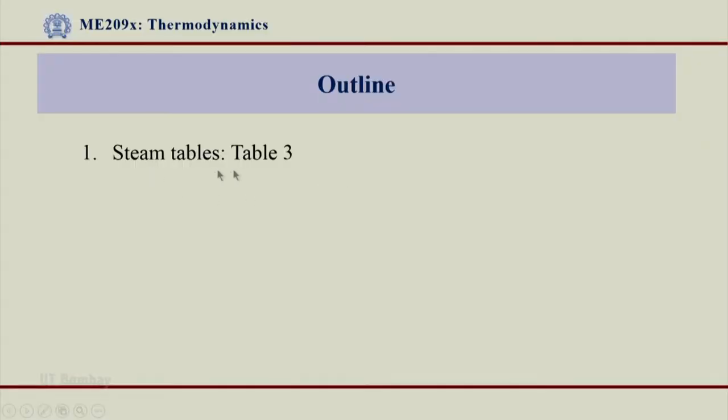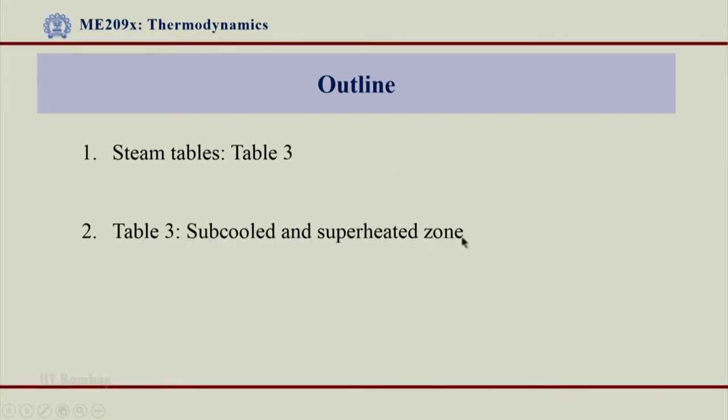Welcome back. After understanding Table 1 and Table 2, and also understanding how to use them to identify which zone a particular state belongs to, let us now come to Table 3, which we have not yet covered. Table 3 deals with the single-phase region. Table 1 and Table 2 refer to the two-phase region or the LV saturation line, while Table 3 takes you to the single-phase region. The single-phase regions we are talking about are the sub-cooled and superheated zones — the properties for those states come from Table 3.